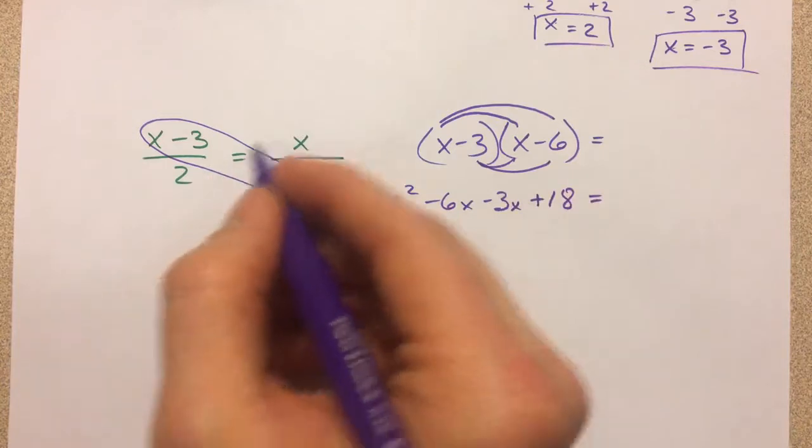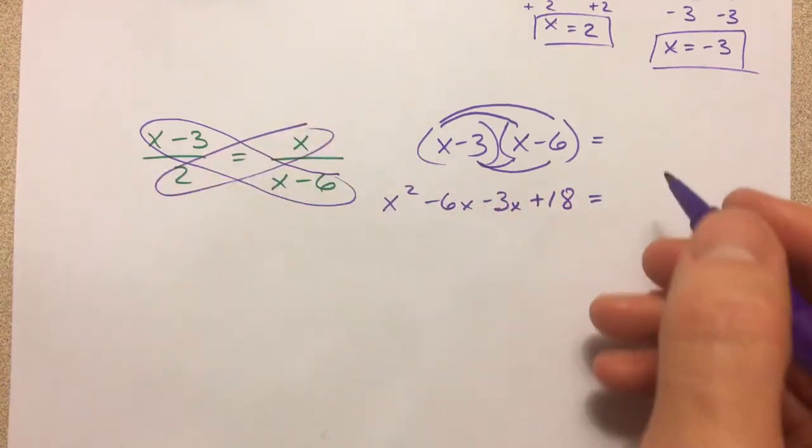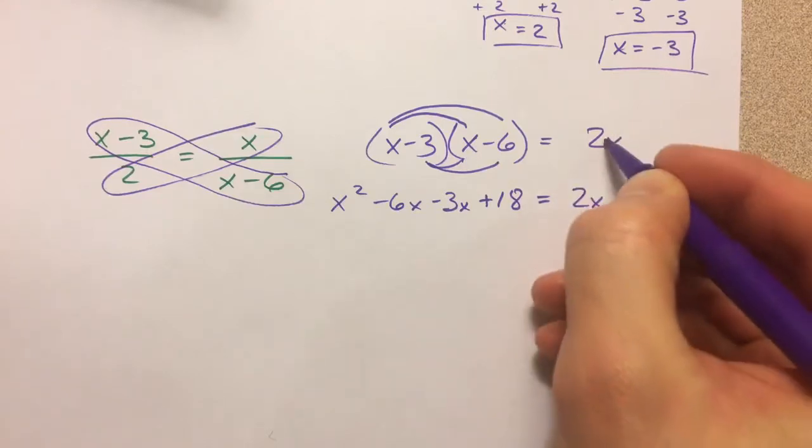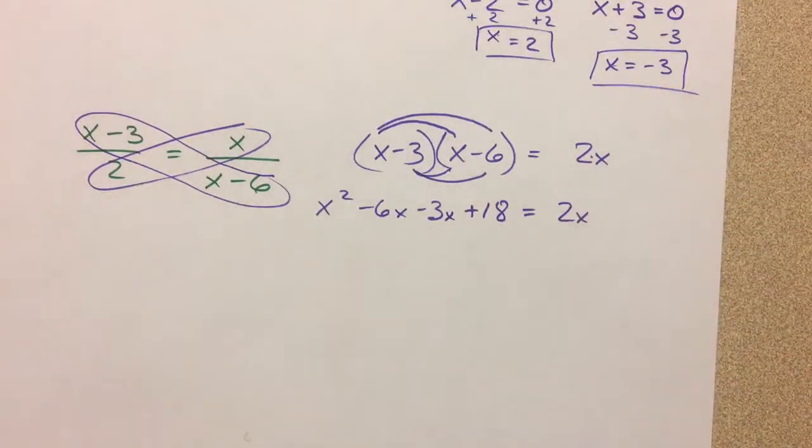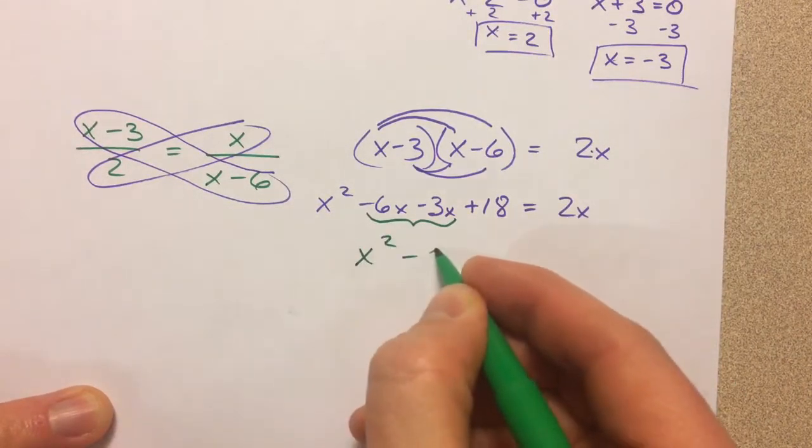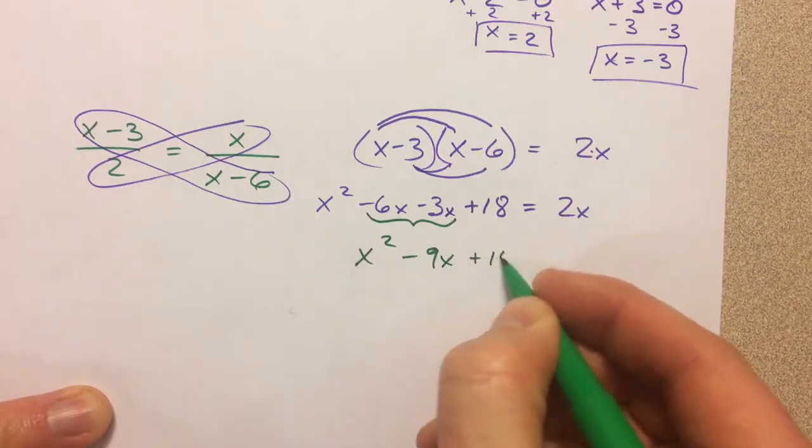And negative 3 times a negative 6 is a positive 18. And then that's equal to, if I cross-multiply here and get 2x. 2 times x. So now, these two terms together, I get x squared minus 9x plus 18.